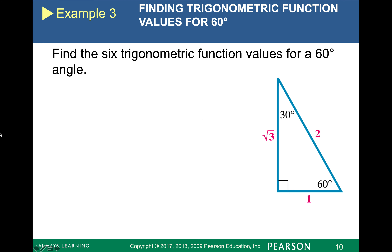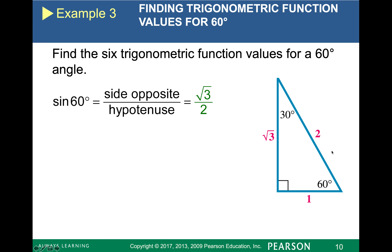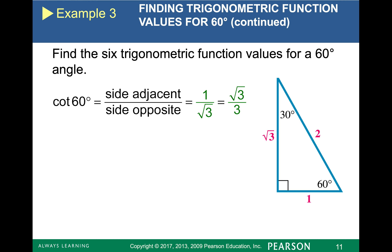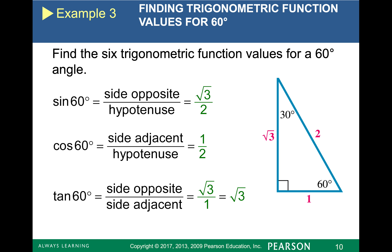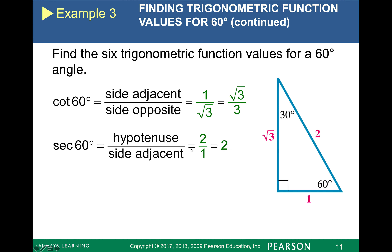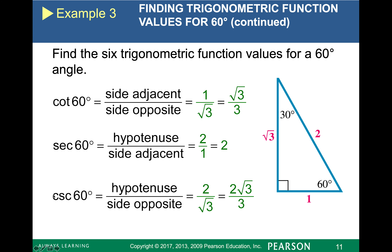Now I can find all of my trig functions. If I want the values for the 60-degree angle, that's my compass — I'm here. Opposite, adjacent, hypotenuse, so I get those trig ratios. Got to orient yourself with that. Now I can find my other three by simply flipping them: cotangent is the flip of tangent, secant is the flip of cosine, and cosecant is the flip of sine.